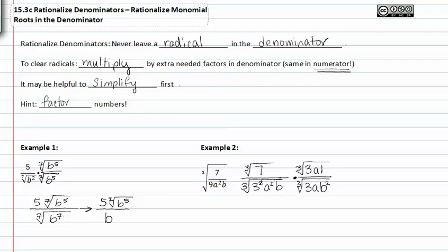Remember, the goal is to rationalize the denominator. When I do this, I get the cubed root of seven times three — which is twenty-one — times a, times b to the second, all over the cubed root of three to the second times three, which is three to the third; a to the second times a to the first, which is a to the third; and b to the first times b to the second, which is b to the third. That will allow me to reduce this rational expression.